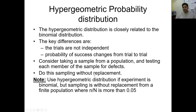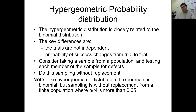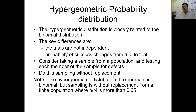Without replacement means you are not putting back into the box. For example, in a class, if I want to select one president and one secretary — if I choose one person as president, that person will not be counted again in the selection process. That same person will not be president and secretary at the same time. We take him or her out, and then start selection for secretary. This is called without replacement.